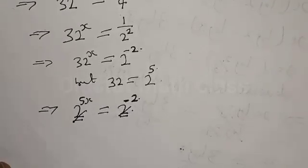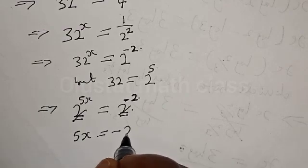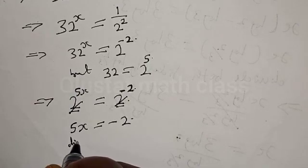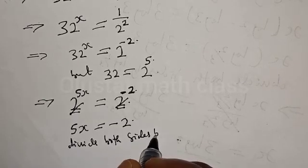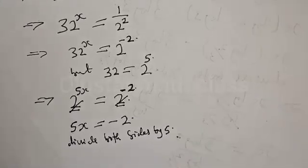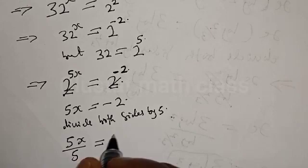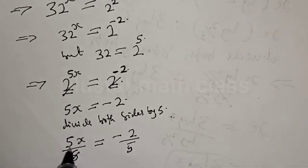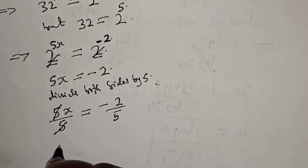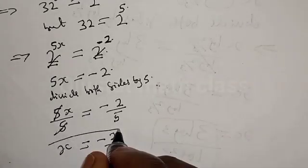Therefore, 5s is equal to minus 2. Dividing both sides by 5, our s will be equal to minus 2 over 5. That is the value of s for the first question.